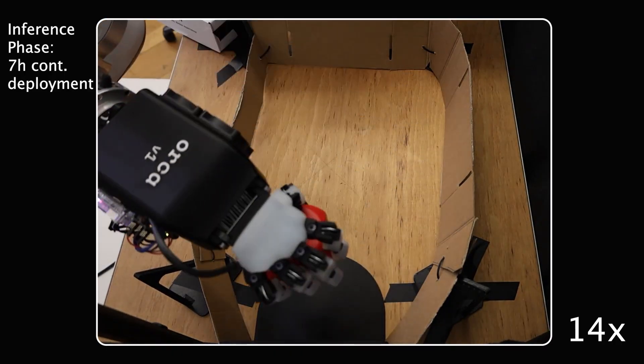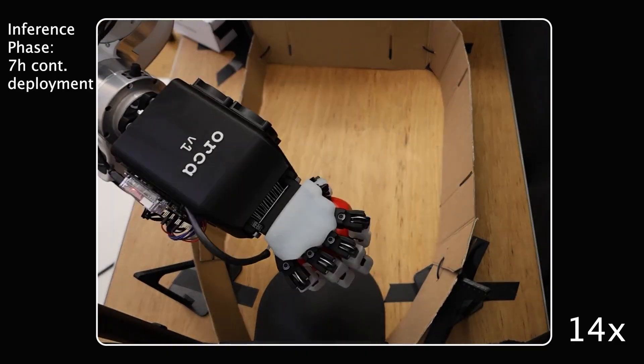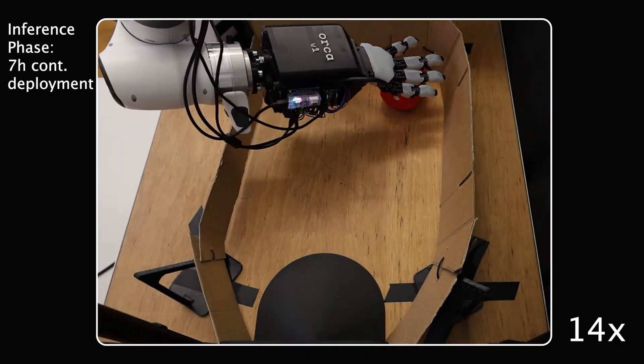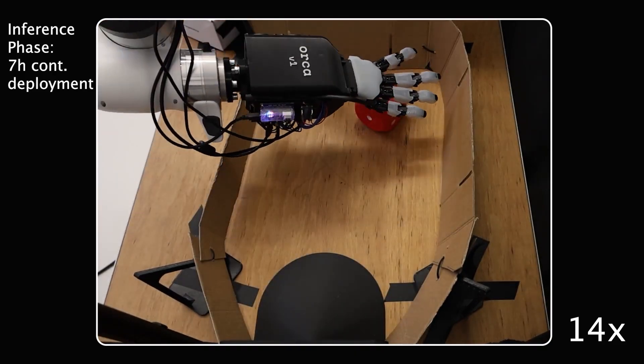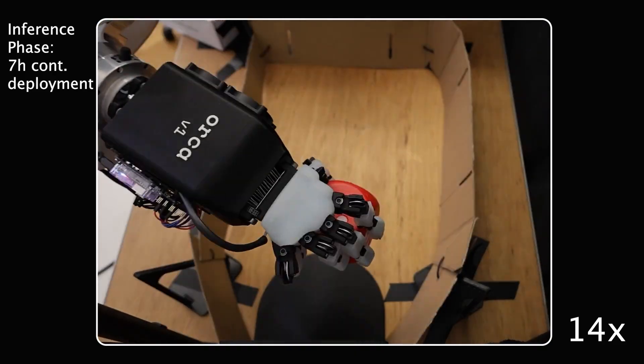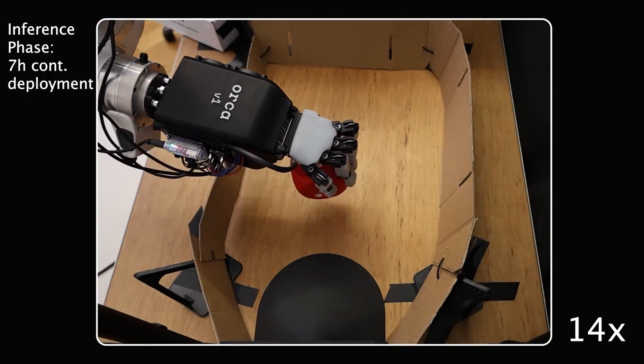To achieve this, the experiment was separated into a training phase, in which a teleoperator continuously performed this task, and a test phase in which the robot tried to imitate what it had seen. We were able to deploy the robot on this task for over 7 hours without the need for human intervention or failure due to tendon slack.